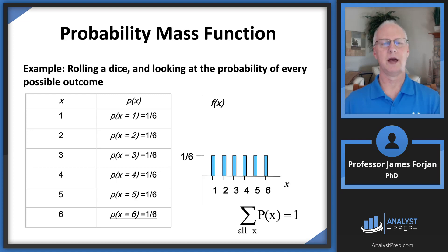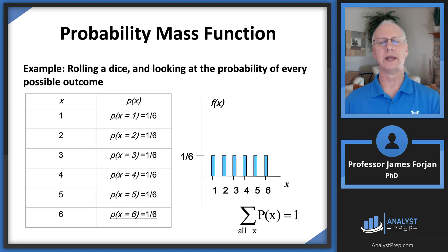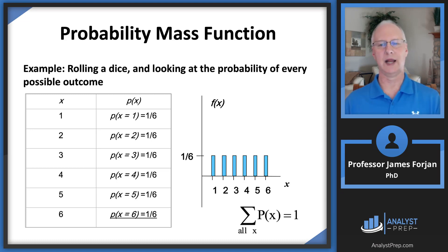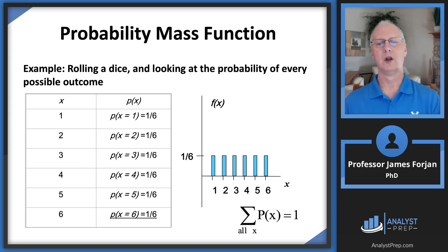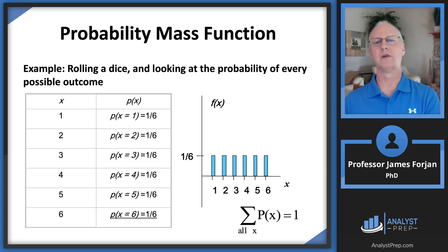Let's look at the probability mass function. This definition isn't inside the chapter, but I wanted to show it because we're looking at probabilities of each possible outcome. When we roll the dice, the probability of each outcome — one through six — is one-sixth. You can see this on the graph where one through six is on the horizontal axis and the probability of each outcome is fixed at one-sixth. This is called a probability mass function, which we'll call something different when we look at continuous random variables.